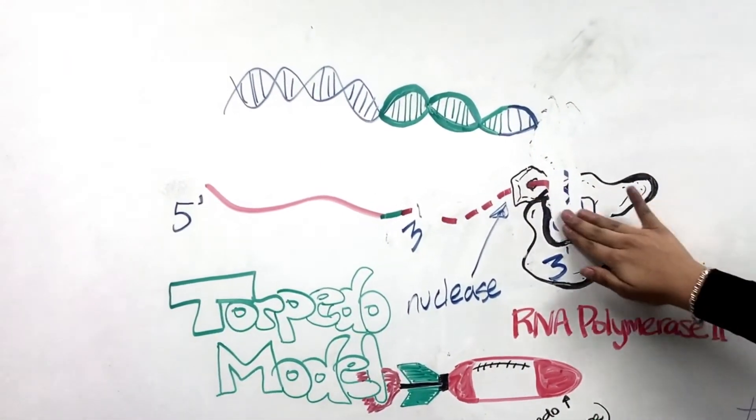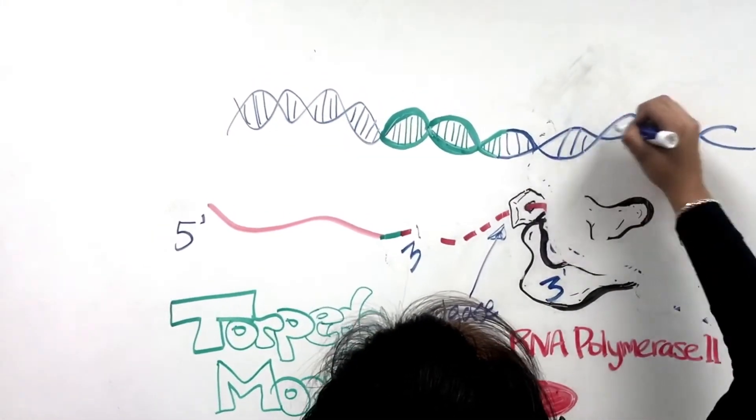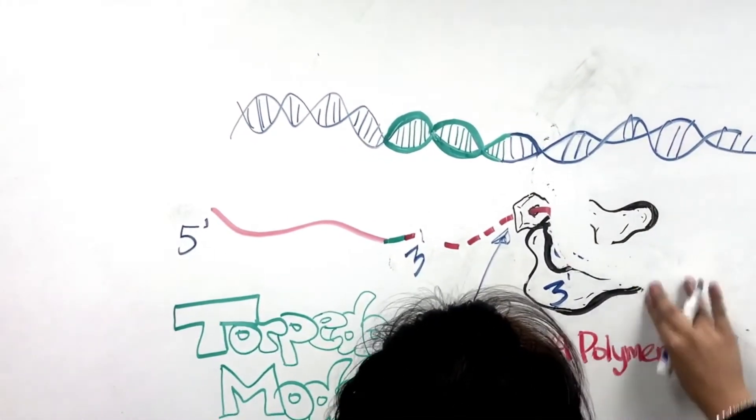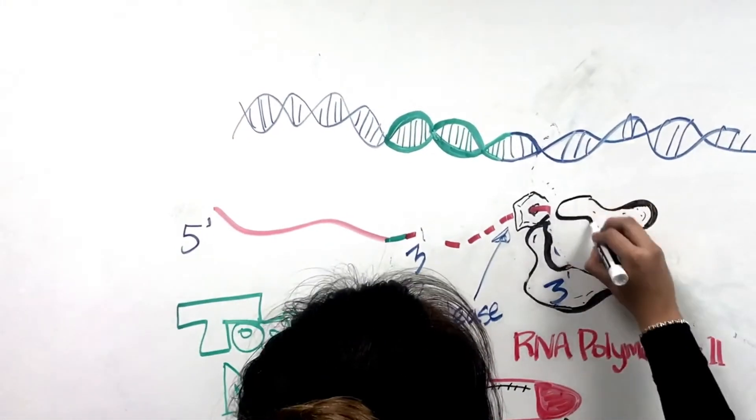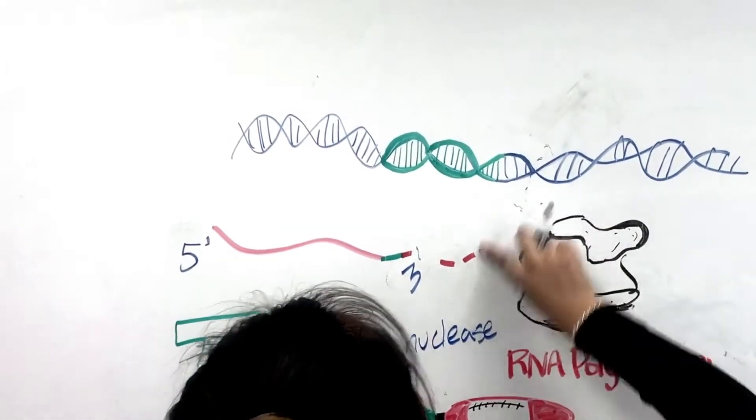which is an enzyme that degrades the transcript in the 5' to 3' direction. When the exonuclease catches up to RNA polymerase 2, this causes RNA polymerase 2 to dissociate from the DNA and cause termination.